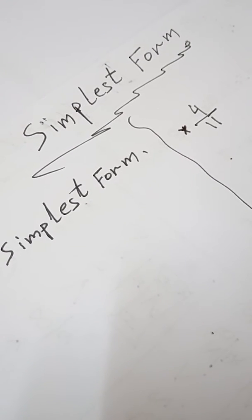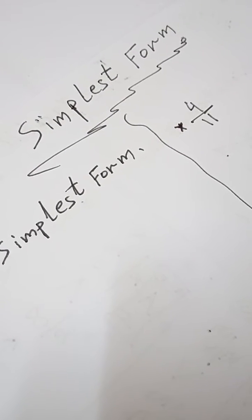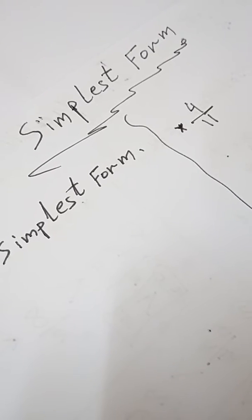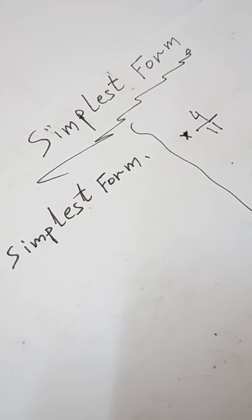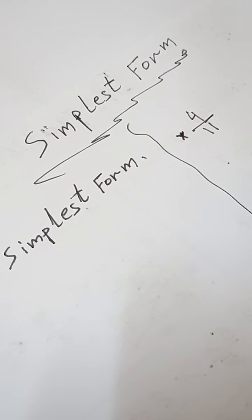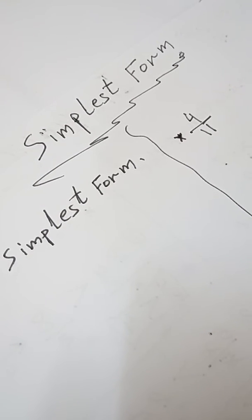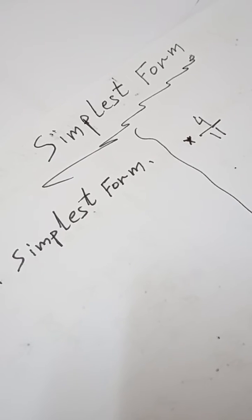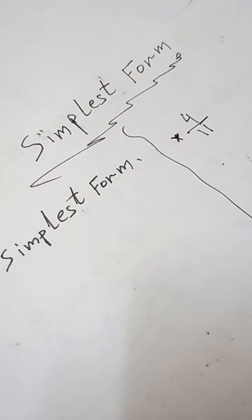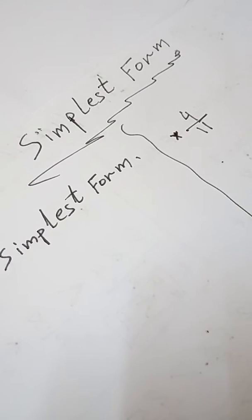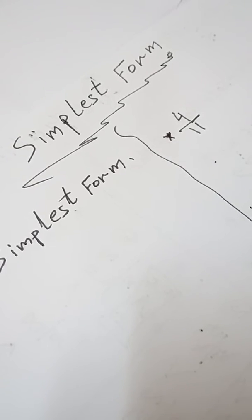Assalamu alaikum warahmatullahi wabarakatuh. Bismillah. Math grade 5, today we have simplest form — how to write the fraction in simplest form. Simplest form means changing the fraction from a difficult form to an easy form. To do this, we use GCF: choose the denominator and numerator, find the prime factors, find the GCF, then divide both numerator and denominator by the GCF to get the simplest form.